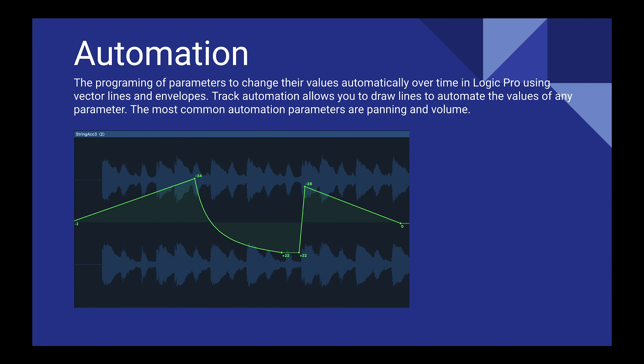Automation is the programming of parameters to change their values automatically over time in Logic Pro — or any DAW such as Ableton, FL Studio, or Pro Tools. They all use automation with vector lines and envelopes. Track automation allows you to draw lines to automate the values of any parameter. The most common automation parameters are panning and volume.